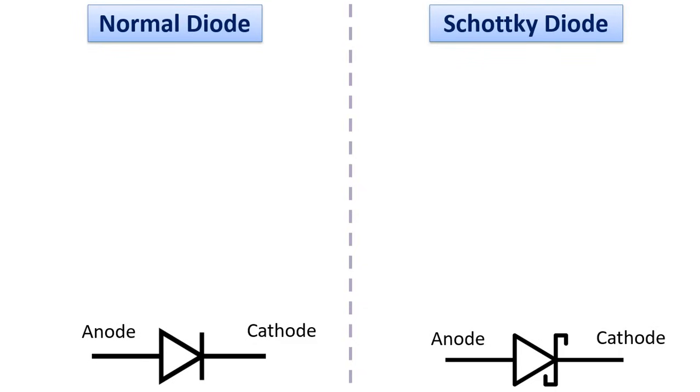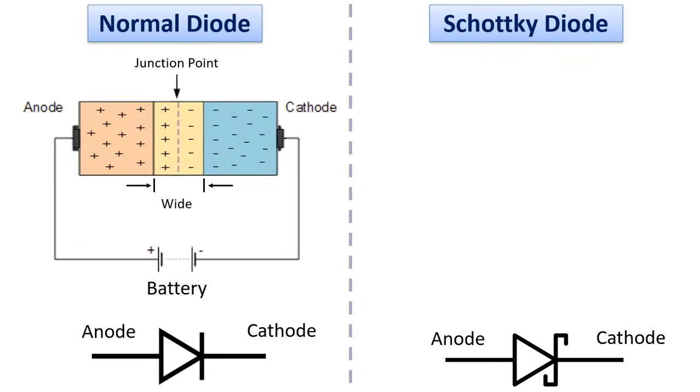Looking at the internal structure, these diodes have lower forward voltage drop compared to ordinary silicon PN junction diodes. Normal silicon diodes consist of combining P-type and N-type doped semiconductors, as here. The junction point, which is the neutral region of the P and N structure, is wide.